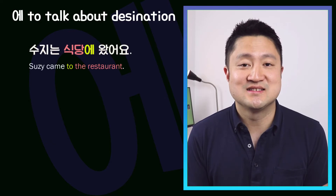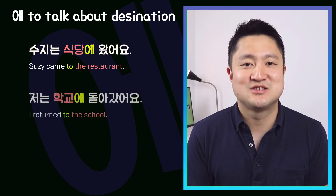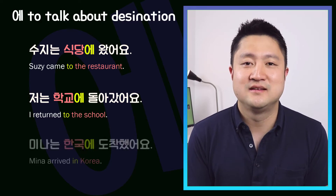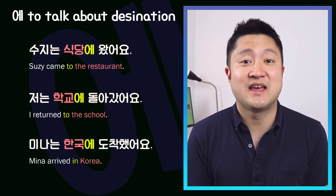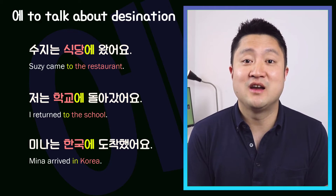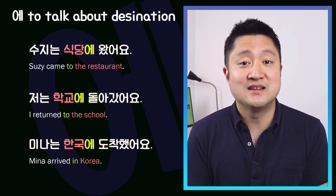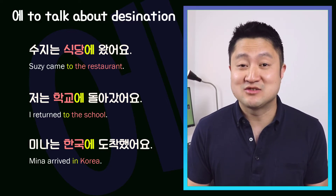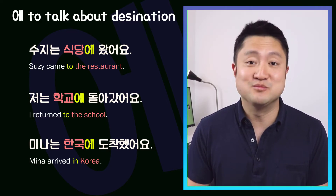Here are a few more example sentences. 수지는 식당에 왔어요 — Susie came to the restaurant. 저는 학교에 돌아갔어요 — I returned to the school. 민아는 한국에 도착했어요 — Mina arrived in Korea. So in each sentence, 에 is used to describe the destination of the verb's movement.